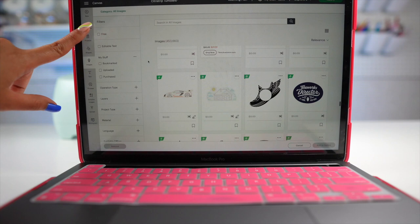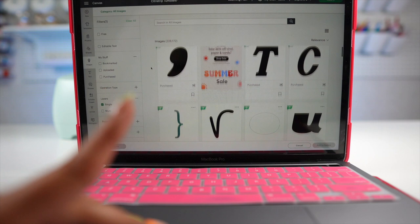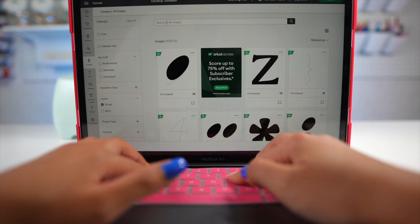So a thing that I like to do is go over here on filters and go down where it says layers, and click on single. This will filter all of the single layered designs that you can use, and then from here you can search whatever category you like.